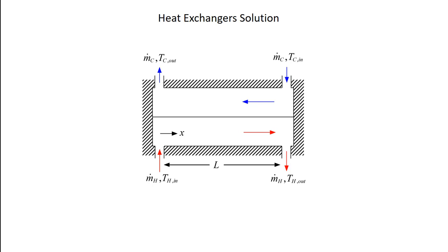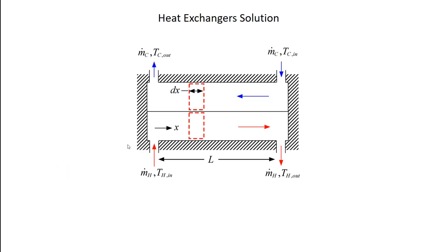What I've drawn here is a counterflow heat exchanger. We have a hot fluid coming in on the left side traveling from left to right, and a cold fluid coming in on the right side traveling from right to left. In reality this is probably happening with many parallel channels interacting with each other, but in concept that's what's going on. To solve this heat exchanger, I have to do an energy balance on the hot fluid — not an energy balance around the entire hot fluid, but a differential control volume that tells me how the hot fluid temperature is evolving with position as it flows through.